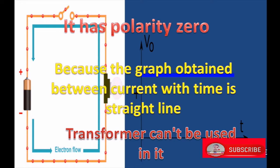Transformer can't be used in DC. Due to zero polarity, its voltage can't be changed by using a transformer.